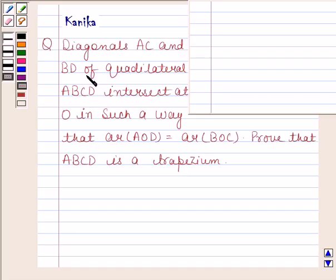The question says diagonals AC and BD of quadrilateral ABCD intersect at O in such a way that area of triangle AOD is equal to area of triangle BOC.